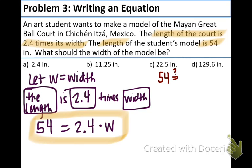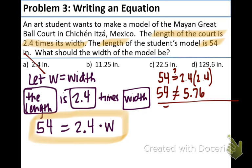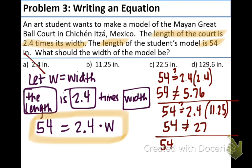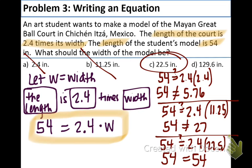54 equals question mark 2.4 times 2.4. When you multiply, you get 5.76. That does not equal 54. So that's not the answer. 54 equals question mark 2.4 times 11.25. And when you multiply that, you get 27. That is not 54. So that doesn't work. Let's plug in 22.5 now. 2.4 times 22.5. And that equals 54. Awesome. So circle C and write down 22.5 is equal to the width. And that's our answer.